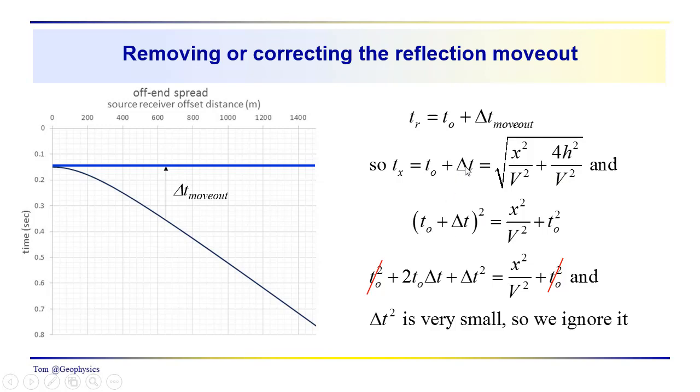So, if we square this, if we have t0 plus delta t squared, and we square this side here, we get x squared over v squared. And remember this is 2h over v squared, so this is t0 squared. We take the square of this quantity here, we get t0 squared plus 2t0 delta t plus delta t squared. That's equal to x squared over v squared plus t0 squared. Obviously, we're going to eliminate these. And very often the assumption that's made in a lot of texts is that this delta t squared is so small, we can just go ahead and ignore it.